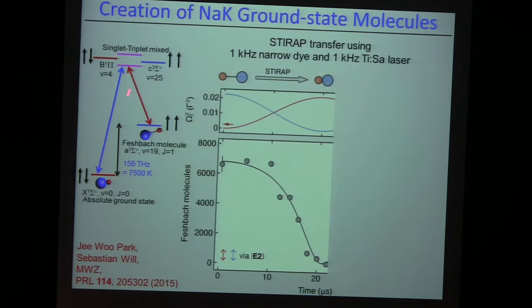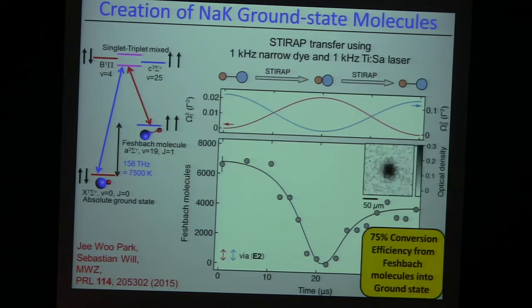This is showing just that the STIRAP — stimulated rapid adiabatic passage — works, where we switch on these laser intensities in a counterintuitive succession. It is providing us the coupling of the Feshbach molecules into the ground state molecules and back, with around 75 to 80 percent efficiency. We apply an electric field and follow the resonance to see what the dipole moment actually is. We can go easily up to 0.8 Debye with the current electrodes.